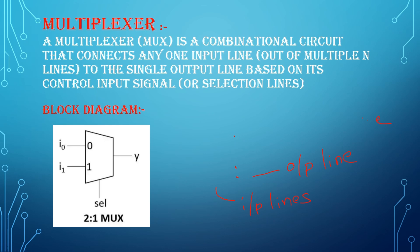And this is the block diagram of 2x1 multiplexer where I0 and I1 are the inputs, y is the output, and SEL is the selection input.